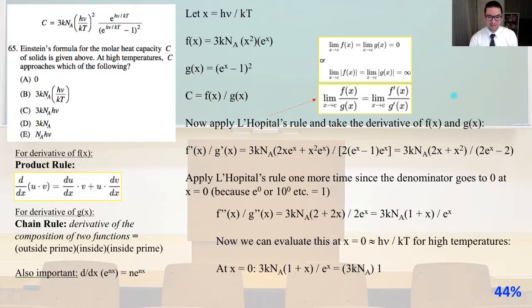So F''(x) divided by G''(x) equals 3kₙA times (2 + 2x) divided by 2e^x equals 3kₙA times (1 + x) divided by e^x. Now we can evaluate this at x equals 0 which about equals hν/(kT) for high temperatures. So at x equals 0, 3kₙA times (1 + x) divided by e^x simply equals 3kₙA times 1. And so that would be answer D.